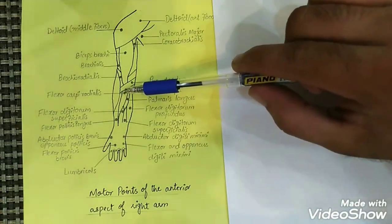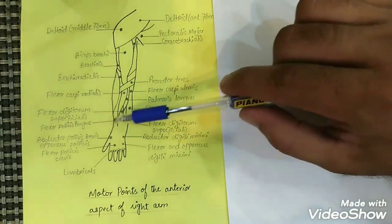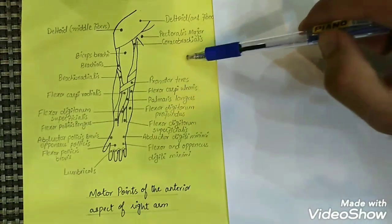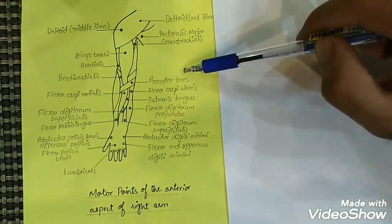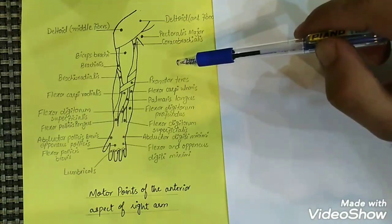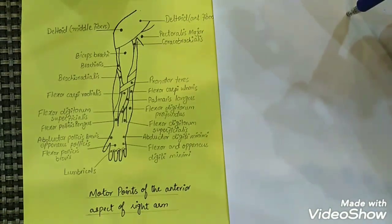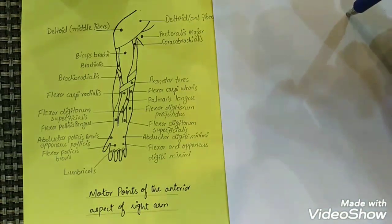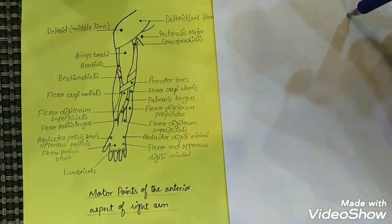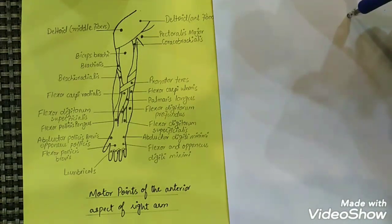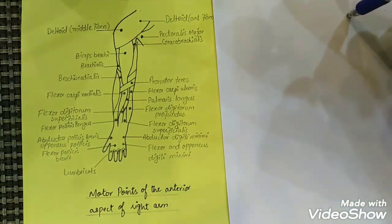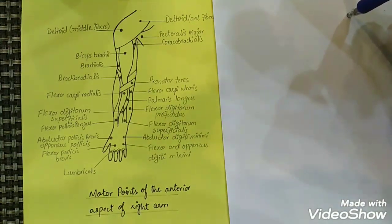To memorize the motor points of any limb, you should first know the muscles of that region — then it will be easier to memorize them. Motor points are a small area on a muscle that can be stimulated with the minimum amount of electrical stimulation. So if we want a contraction of any muscle, we should target its motor point to achieve maximum contraction.